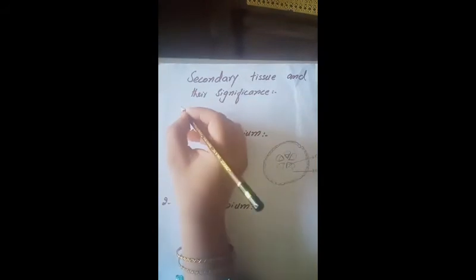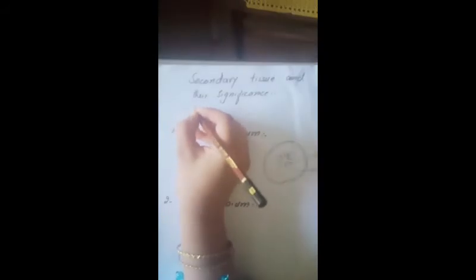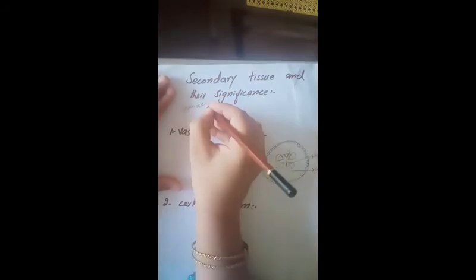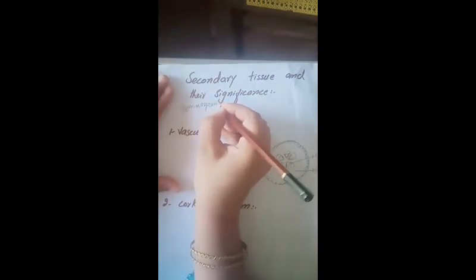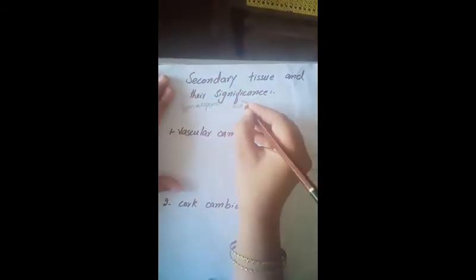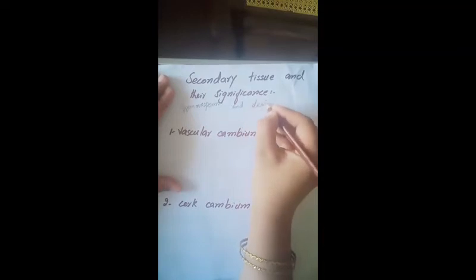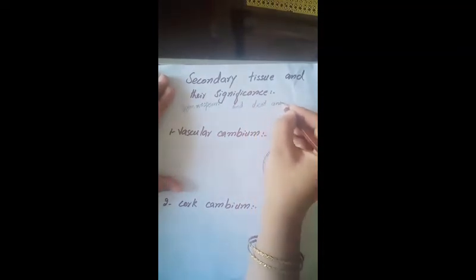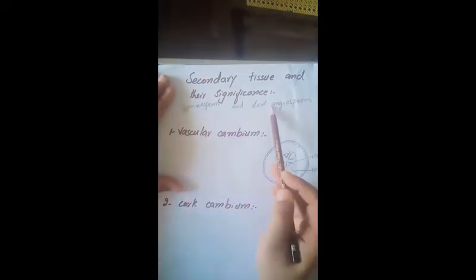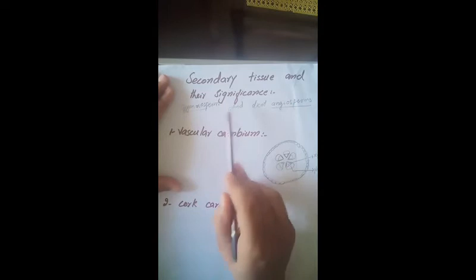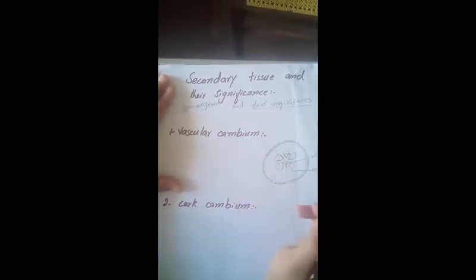Secondary tissue of the plant is found only in Gymnosperms and Dicot Angiosperms. You know what Gymnosperms are — non-flowering plants. Angiosperms are flowering plants. Secondary growth is found in Dicot Angiosperm plants.